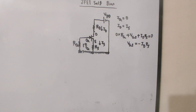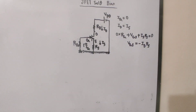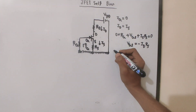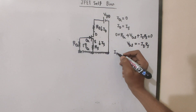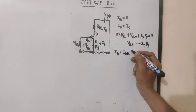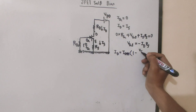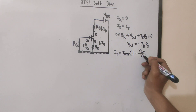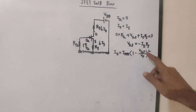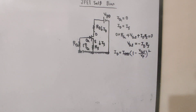So Vgs equals minus ID times Rs. To find the Q-point we use the transfer curve equation. The transfer curve is the standard equation: ID equals IDSS times (1 minus Vgs divided by Vp) squared. We will use this equation along with the self-bias line equation.